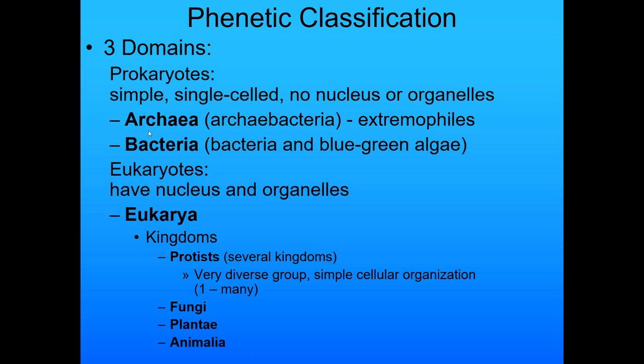The third domain is the eukaryotes, which have a nucleus and organelles. In the eukarya, we have a couple of different kingdoms: we have the protists, which is a very diverse group going from simple unicellular organisms to multicellular organisms. We have fungi, plantae, and animalia. We're going to talk about the protists and the fungi today, animalia this week, and then plantae in the lecture after that.